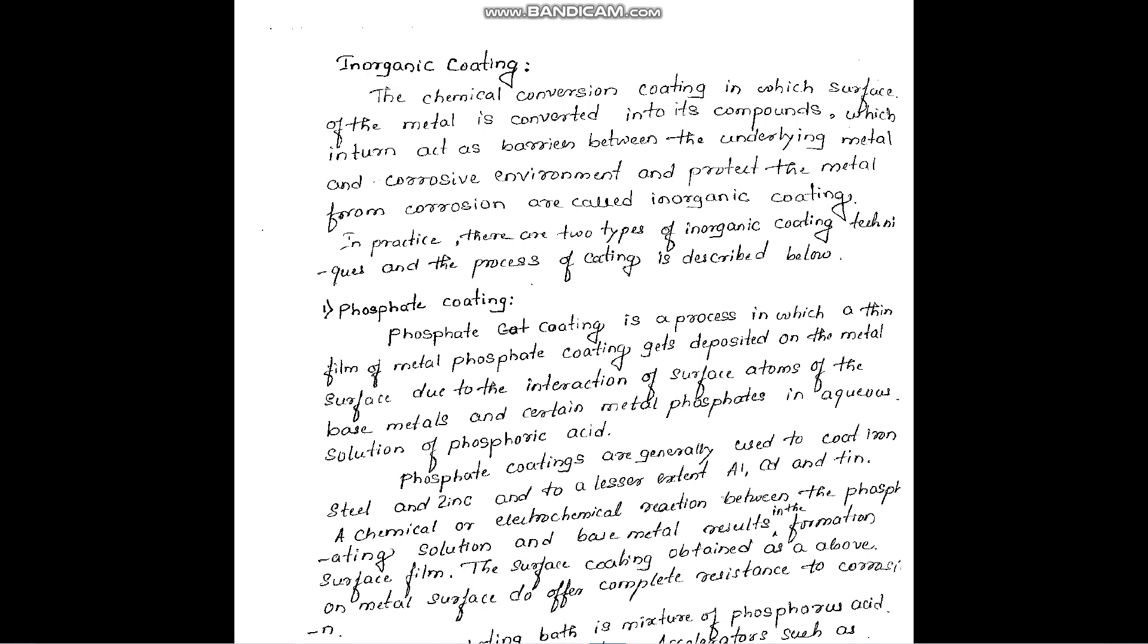The metal surface itself is converted into an inorganic compound so that it becomes an inorganic coating and acts as a barrier between environment and metal surface, so that metal will not come in direct contact with the environment and is prevented from corrosion.